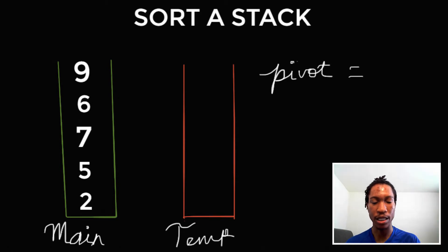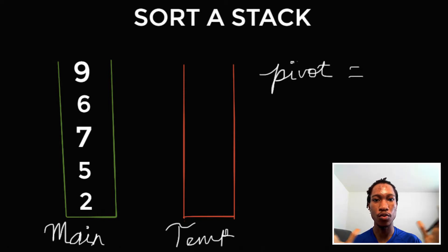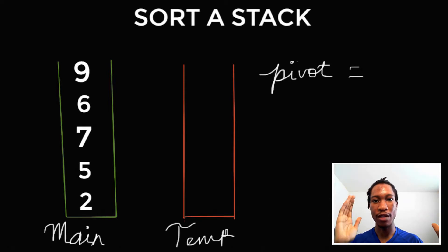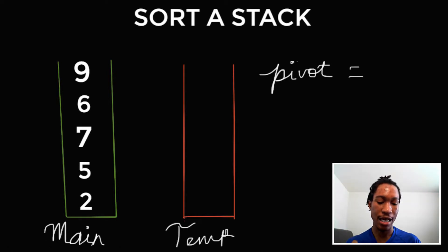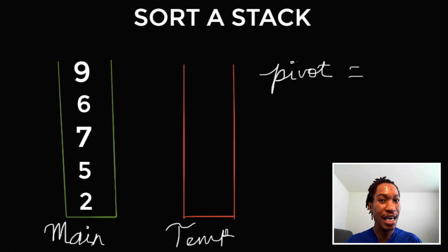You don't have access to the last element and the first element. You can't do a two-way linear search and then do a while loop with right variable, left variable, right indices, and left indices, and then come together swapping the elements. So, it's difficult to sort a stack.